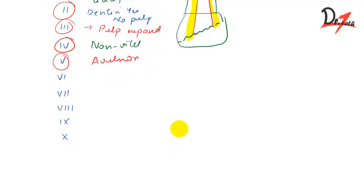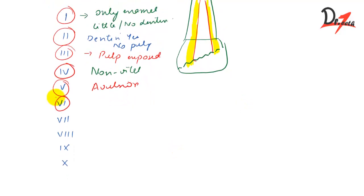Coming on to Class 6, we have fracture of the root with or without loss of the crown structure. The crown may or may not be lost, but there is definitely a fracture in the root. In Class 7, we neither have crown or root fracture, but we have displacement of tooth. The tooth will be displaced but will not come totally out of the cavity.